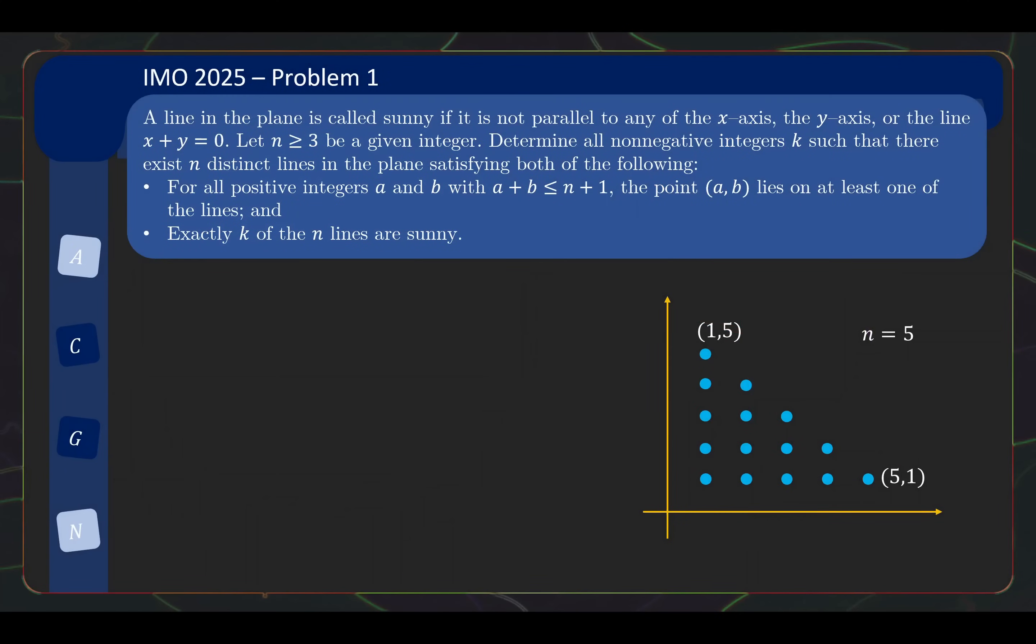Problem 1 is a combinatorics problem and you may even consider it to be a combinatorial geometry problem. That is pretty insane for a problem 1. The problem statement is a little bit confusing, so after doing the first reading, I will help you break down the problem statement. Do not worry.